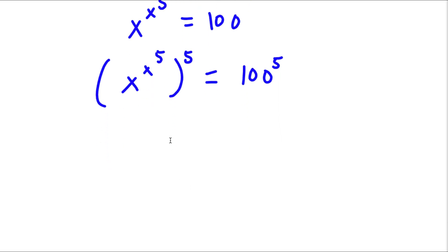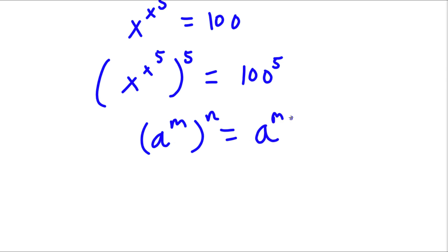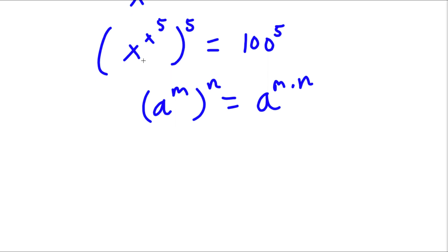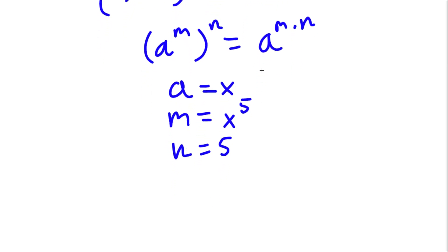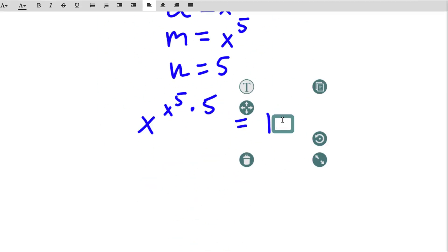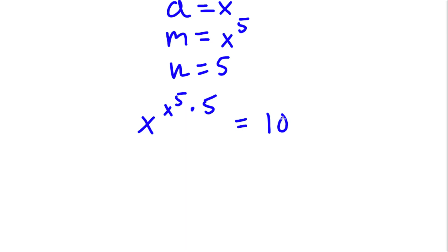Now, if I have something in the form a to the power of m to the power of n, this is equal to a to the power of m times n. So as you can see, we have x to the power of x to the power of 5, to the power of 5. In this case, a is equal to x, m is equal to x to the power of 5, and n is equal to 5. So I want to write this as x to the power of x to the power of 5 times 5, and this is still equal to 100 to the power of 5.